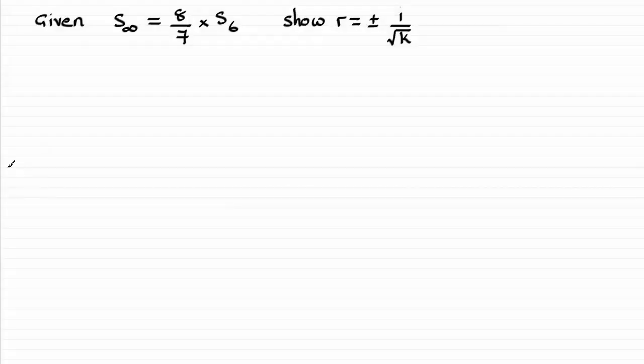For this question, we're given the sum to infinity of a geometric progression is equal to 8 sevenths times the sum of the first six terms. And we've got to show that the common ratio r is equal to plus or minus 1 over root k. We've got to give the value of k. So how do we go about this?